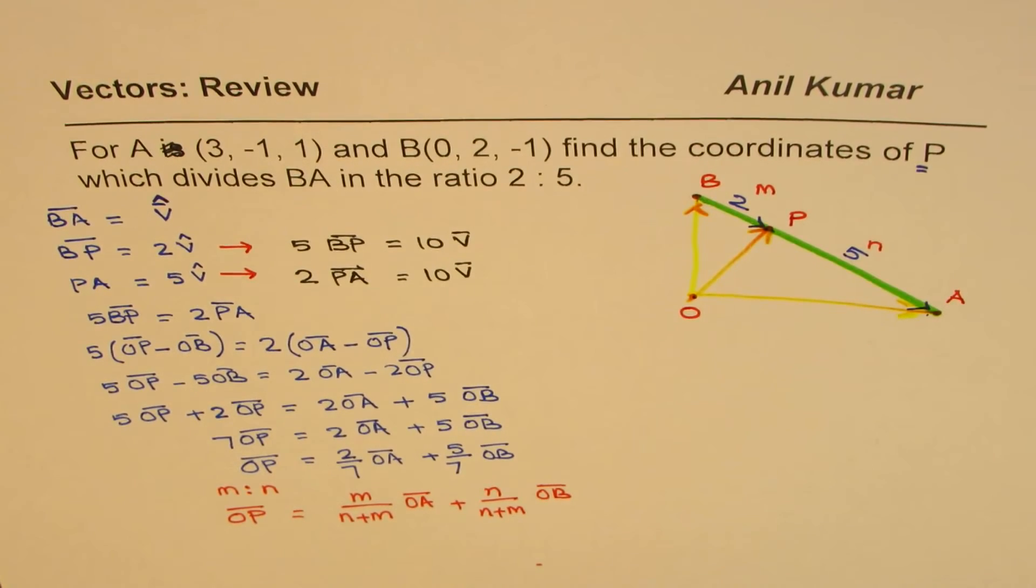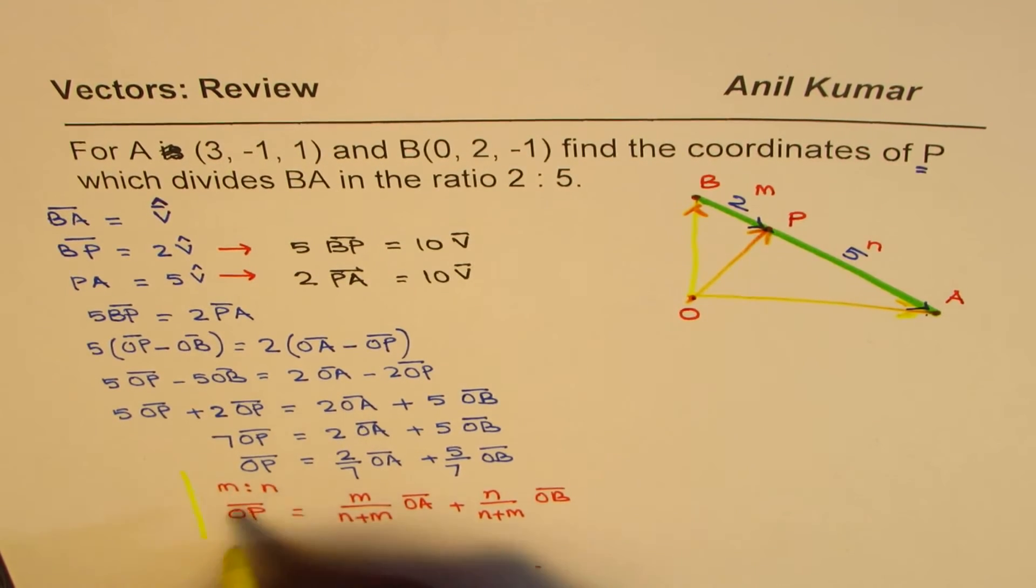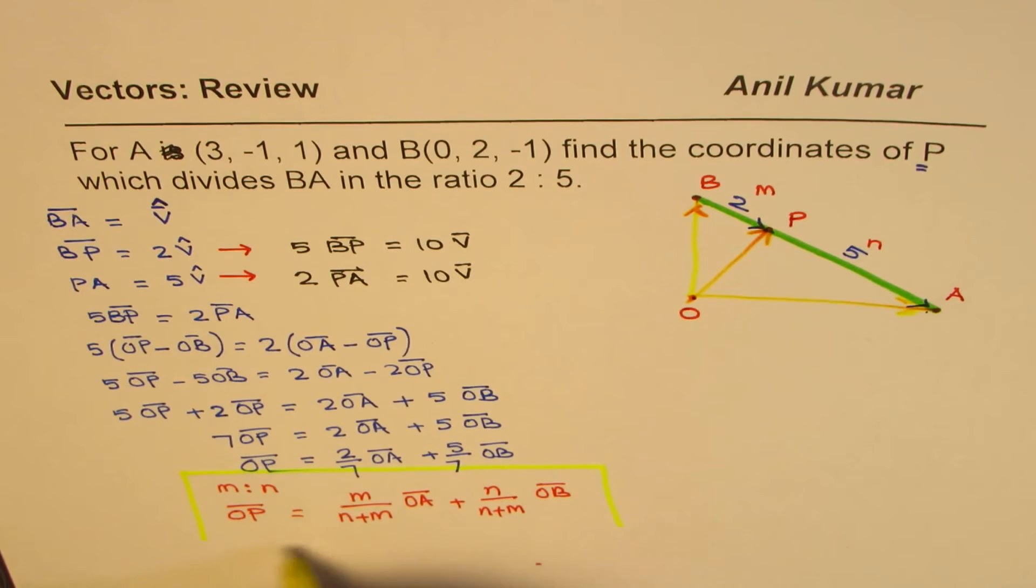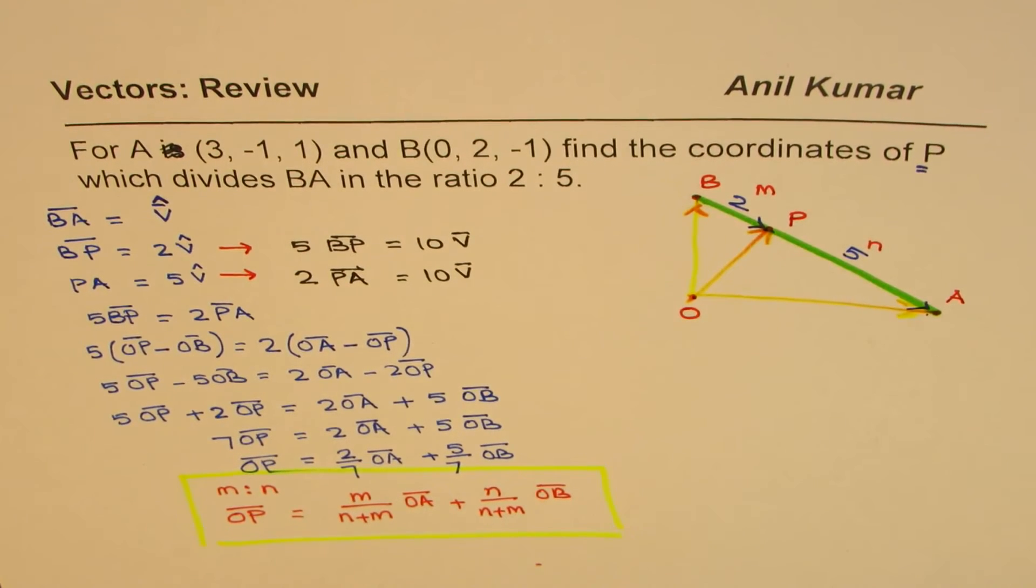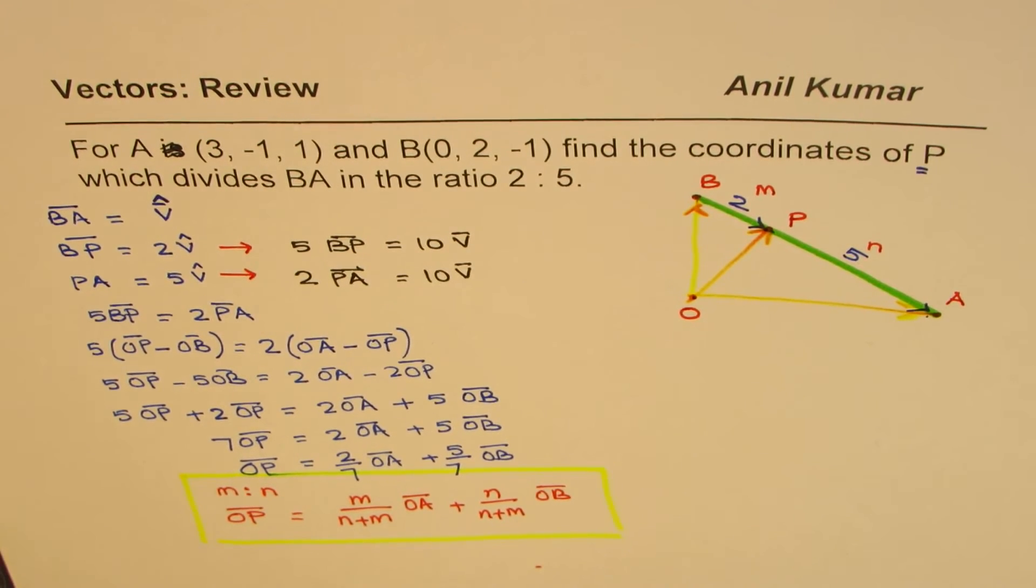So M over N plus M times OA plus N over N plus M times OB. So that becomes a general formula, which can always be applied for such situations. So whenever we are dividing a line segment in a ratio, we could apply this formula.